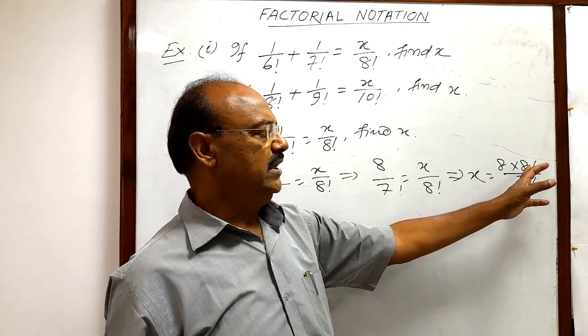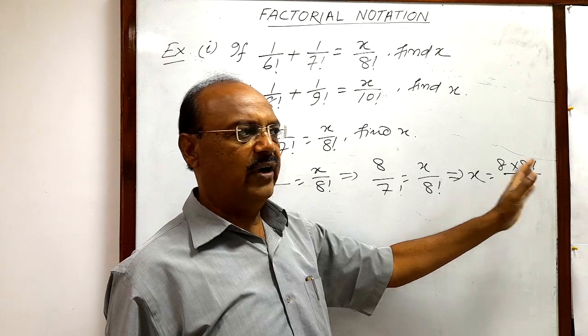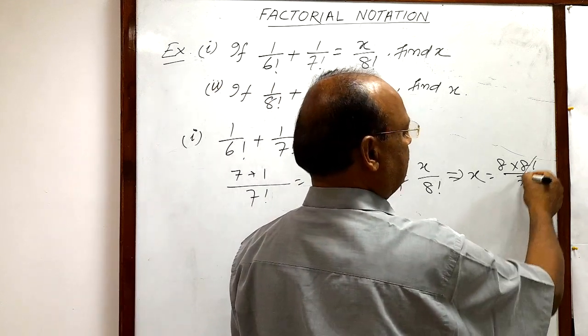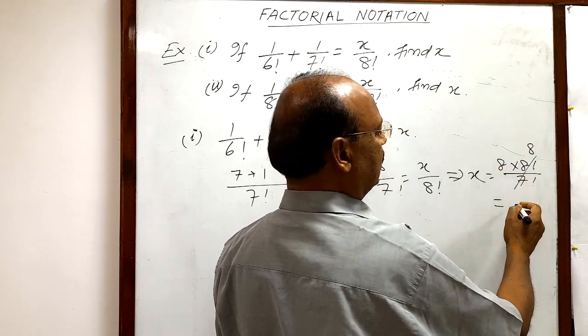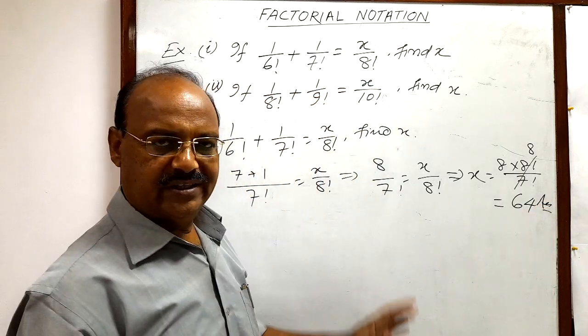So as you know 8 factorial is 1 into 2 into 3 up to 8 and 7 factorial is 1 into 3 into up to 7. So we will cancel out these two numbers and we will write here 8. So finally this is 8 into 8, this is equal to 64, this is the answer, very simple.